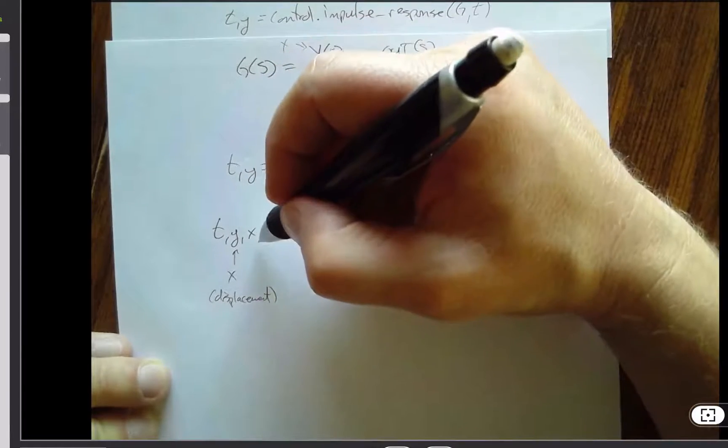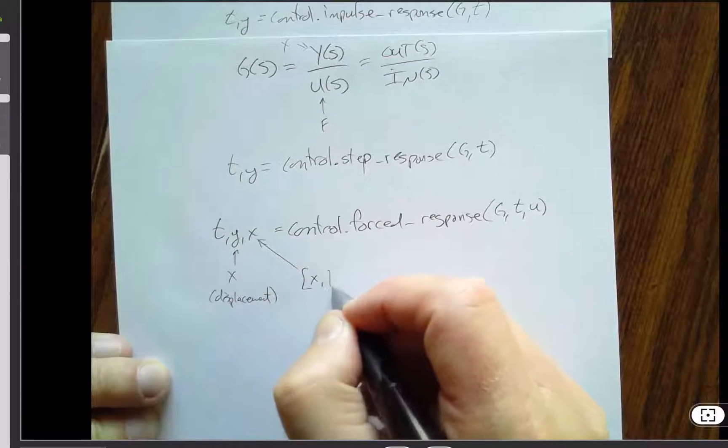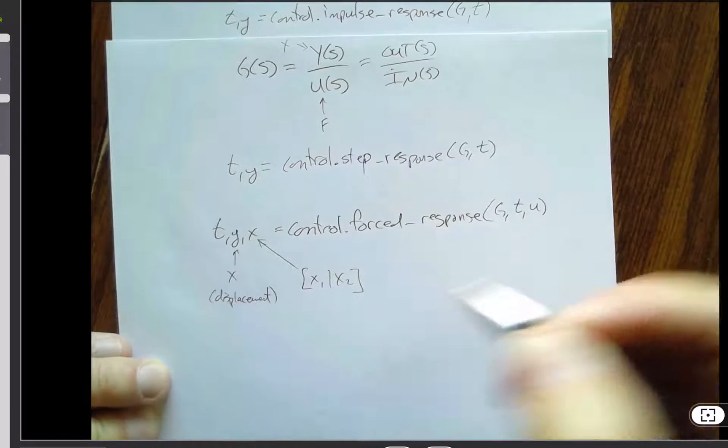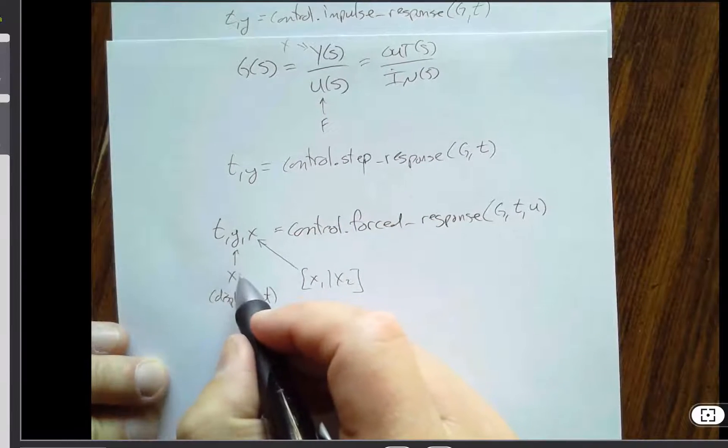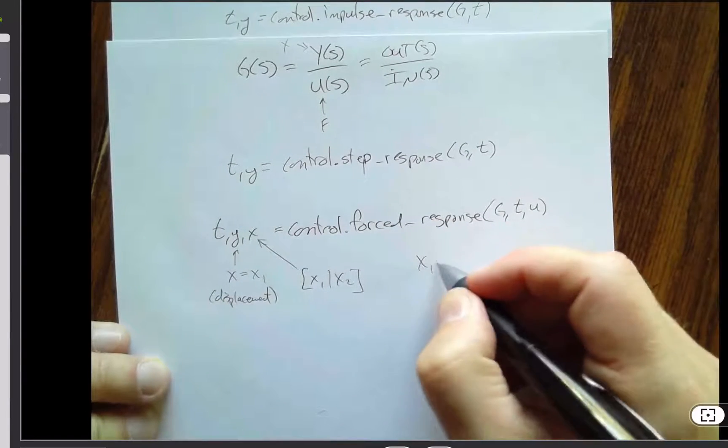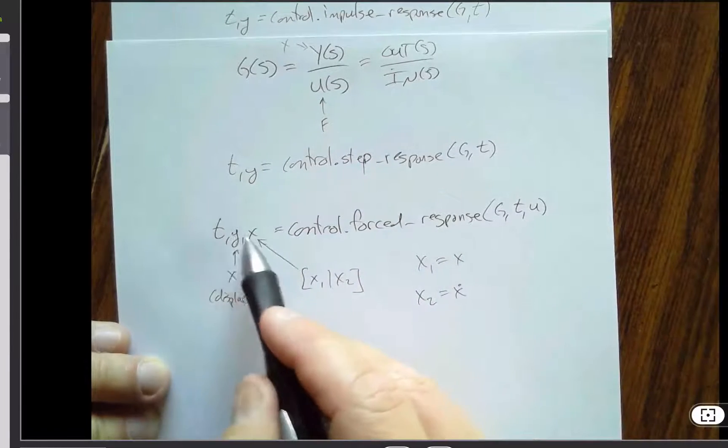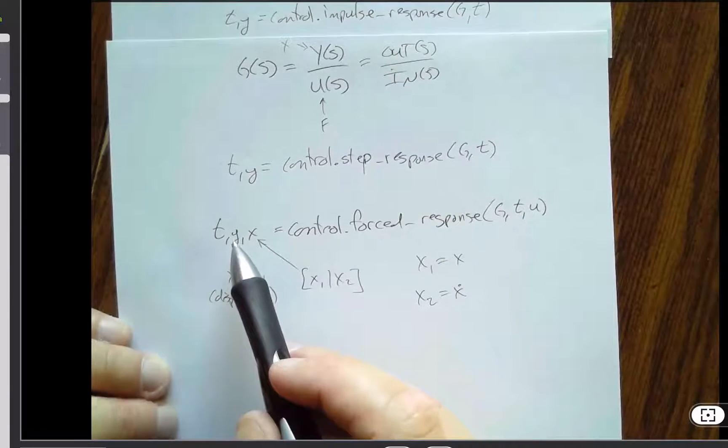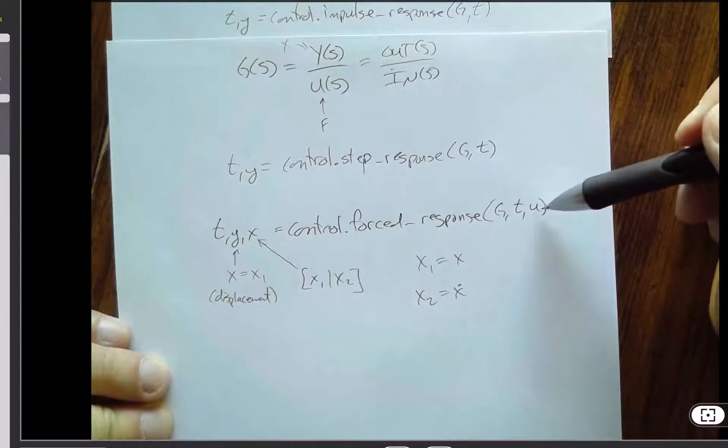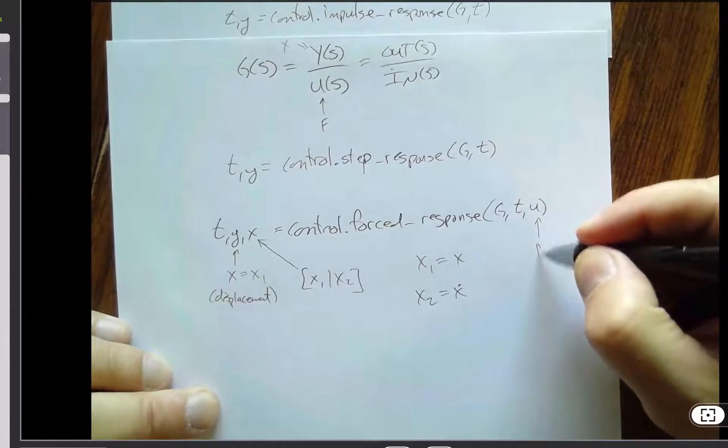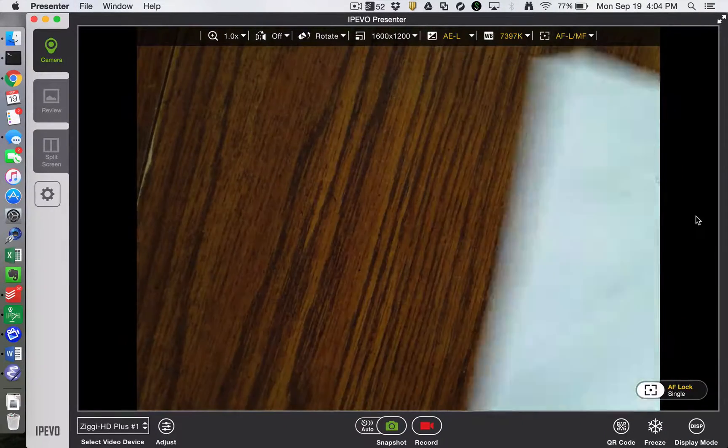And then you remember that in lab we talked about a state space representation, well, this would be a matrix that contains x1 and x2 if we have a second order mass spring damper system. And this would also then equal x1, where x1 is defined to be x, and x2 is defined to be x dot. So this combination of y and x, I claim, is a little bit confusing. Y in the control.forced response is always an output, and u is always an input, and in our language that would make that f. So sorry if that's caused a little bit of confusion.